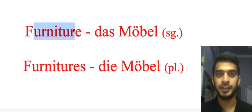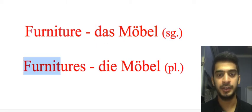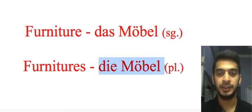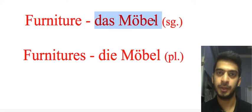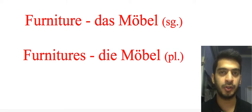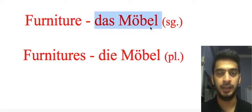Our next word is 'furniture': 'das Möbel' — singular form; 'die Möbel' — plural form. Again, no change in spelling between singular and plural. In this word we have O with umlaut, meaning two dots above the letter O, which has a pronunciation of 'ö'. So we call it 'das Möbel' singular and 'die Möbel' plural.